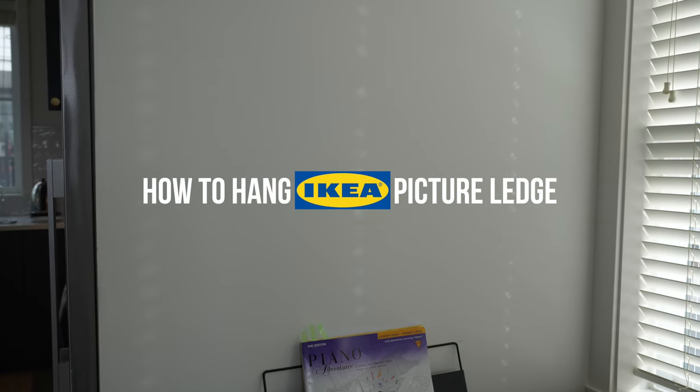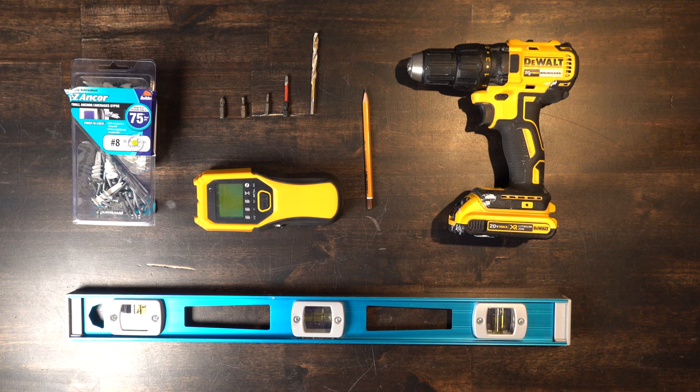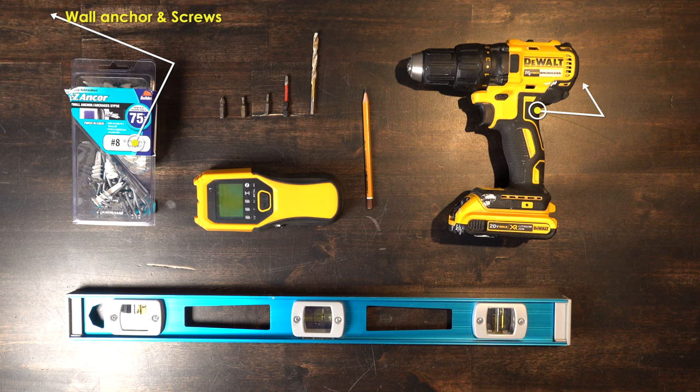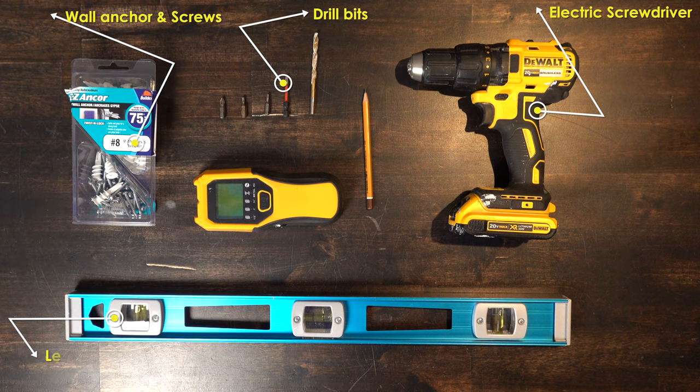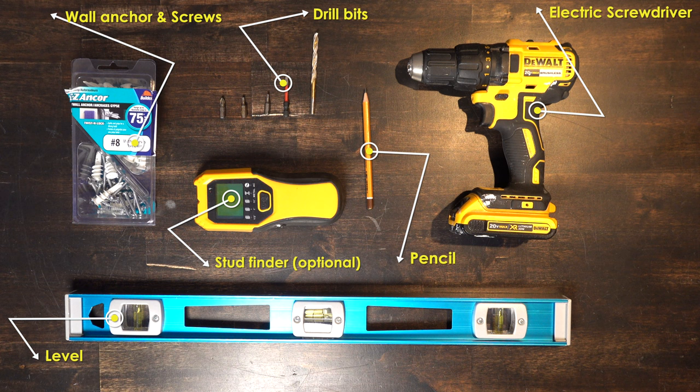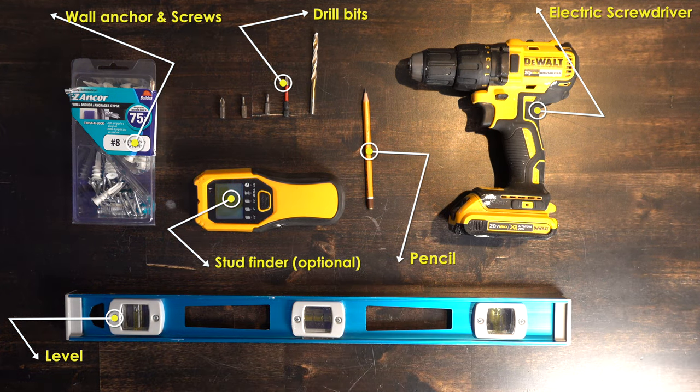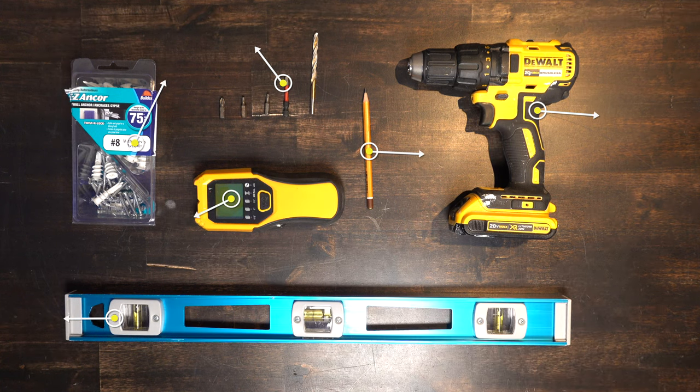Hi, in this video I will show you how to hang an IKEA picture ledge. Tools that you need: wall anchors and screws, electric screwdriver, drill bits depending on your screws, level, pencil, and stud finder. No hardware is coming with the shelf, so you have to have your own tools, screws, and anchors. Links to everything I use are down in the description.